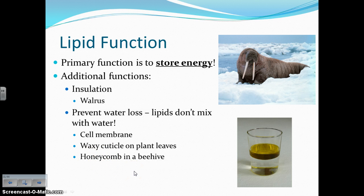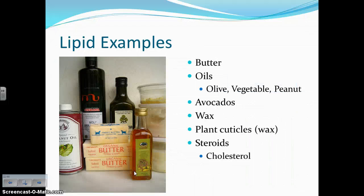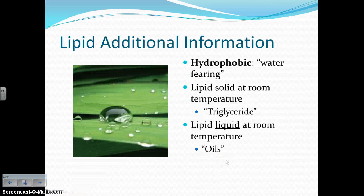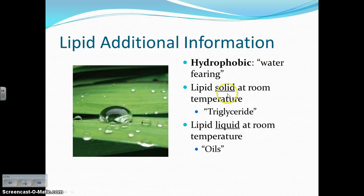Honeycomb in a beehive is full of lipids, which allows water to stay within the beehive. Examples of lipids include butter, oils like olive oil, vegetable oil, and peanut oil, avocados as a delicious source of good lipids, waxes including the waxy cuticle on the outside of plant leaves, and steroids, which are a very important lipid — cholesterol gets a bad rep but is very important in our bodies. Lipids are what's called hydrophobic — hydro meaning water, phobic meaning fearing — so lipids are water-fearing, meaning they don't mix with water. If a lipid is solid at room temperature, we call it a triglyceride; if it's liquid at room temperature, we call it an oil.